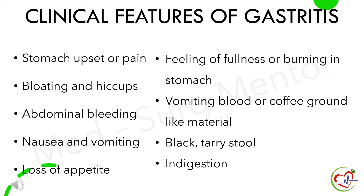Important clinical features of gastritis are stomach upset or pain, bloating and hiccups, abdominal bleeding, nausea and vomiting, loss of appetite, feeling of fullness or burning in the stomach, vomiting blood or coffee ground-like material, black tarry stool, and indigestion.